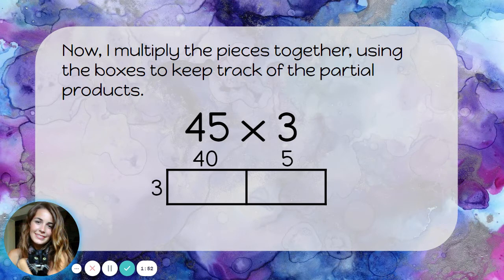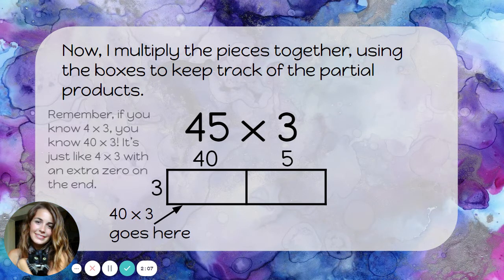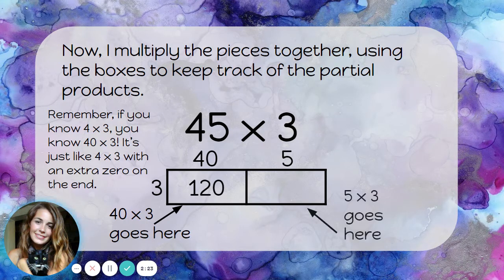Now I'll multiply the pieces together using the boxes to keep track of the partial products. It's basically like I've set up a multiplication table for myself. In this box, I'm going to multiply 40 times 3. Remember, if you know what 4 times 3 is, you know what 40 times 3 is — it's just like 4 times 3 with an extra zero on the end. 4 times 3 is 12, so 40 times 3 is 120. And in this box, I'm going to multiply 3 times 5, which is 15.